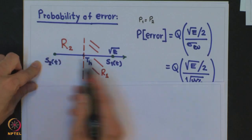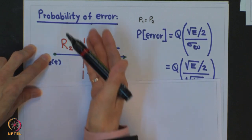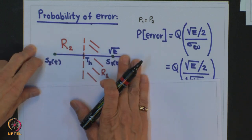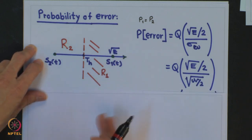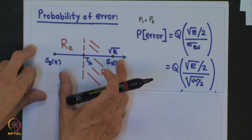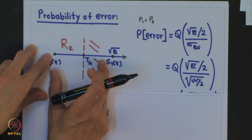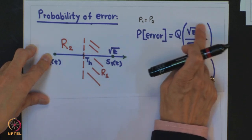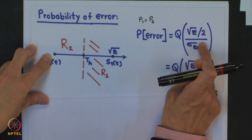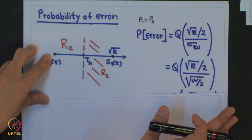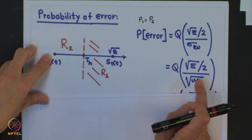The calculation of the probability of error is straightforward from the signal constellation. The decision boundary is at the midpoint; this side is region R2 and this side is region R1. The probability of error is Q times the distance divided by 2 and the standard deviation of the noise. We project the noise onto the phi_1 axis, which is orthonormal, therefore the variance remains N/2 and the standard deviation is the square root of that.